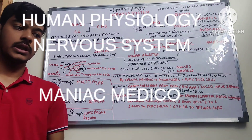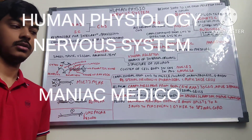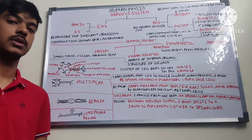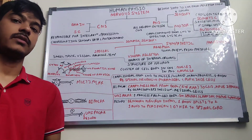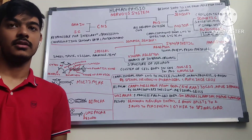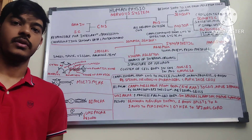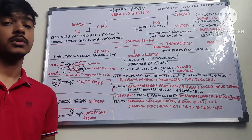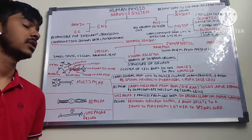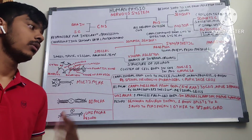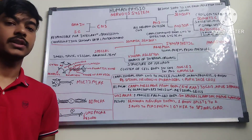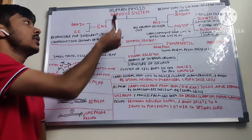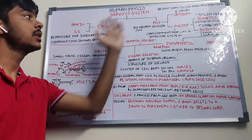Hello guys, welcome back to my channel. Today we are going to discuss about human physiology or normal physiology, and we'll start with the very interesting — or rather very difficult — topic for everybody: the nervous system. We'll discuss about the central nervous system, the peripheral nervous system, the types of neurons, how action potential is generated, how it is transferred, and various other things.